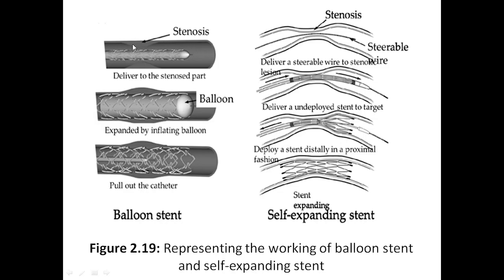This is exactly how it looks — this is the blocked part of the artery or capillary. You can see it is blocked here. Now you are inserting the balloon catheter, delivering it to the stenosed part. The balloon will be there initially, and that balloon will open up this particular blockage. See, whatever was built up as a block is going up now — it has expanded by inflating the balloon. The balloon is inflated and that is why it is expanding.